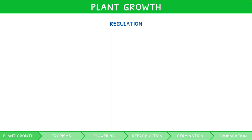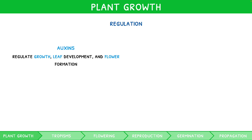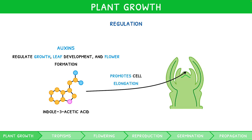This process requires regulation, and there are several important hormones involved. The most important are auxins, which regulate growth, leaf development, and flower formation. The most prevalent auxin in plants is indole-3-acetic acid, I3AA. Its role is to promote cell elongation as stimulated by the apical meristems. It also acts to inhibit residual cells left behind by the apical meristem, known as auxiliary buds, located at the junction of the stem and leaf. This phenomenon is known as apical dominance.